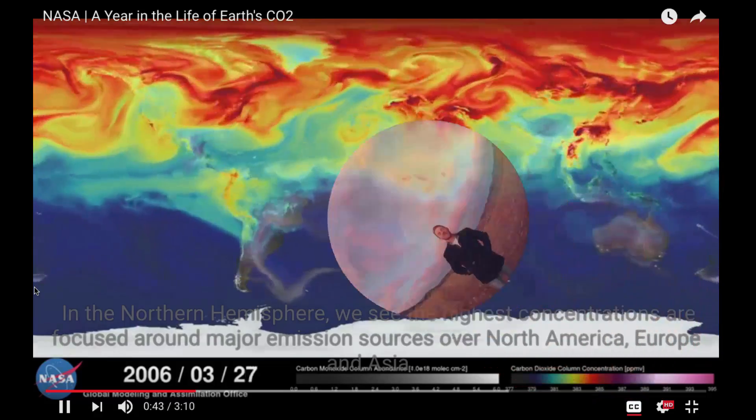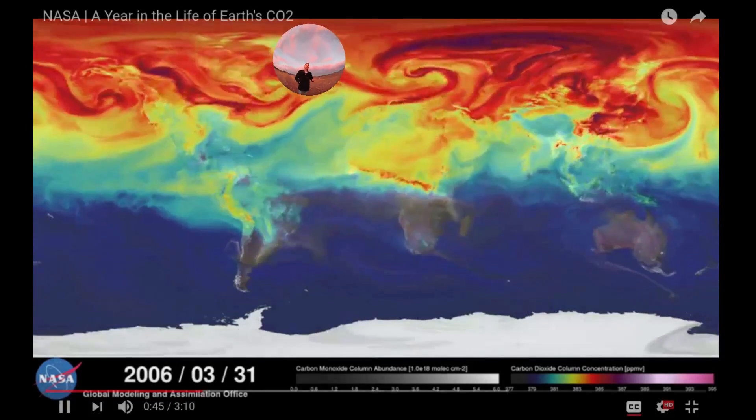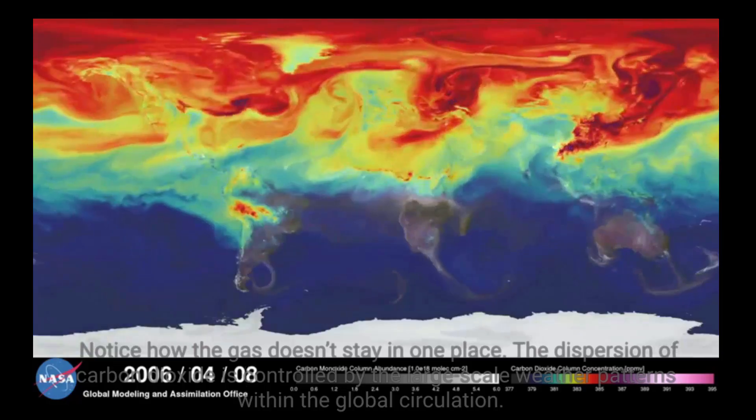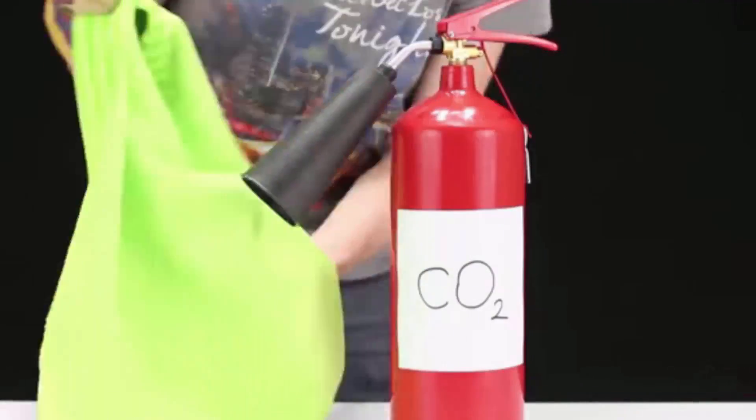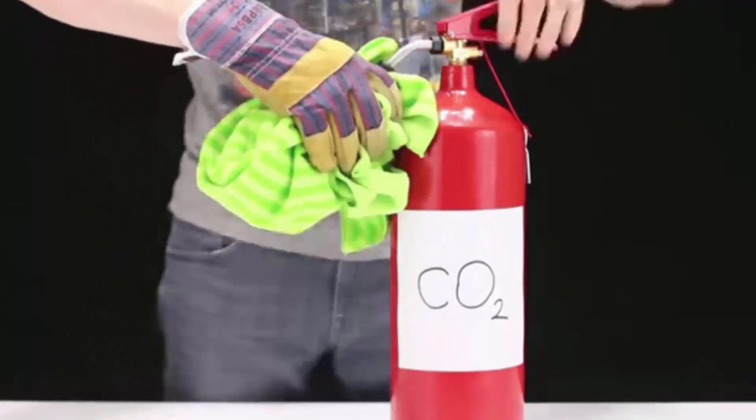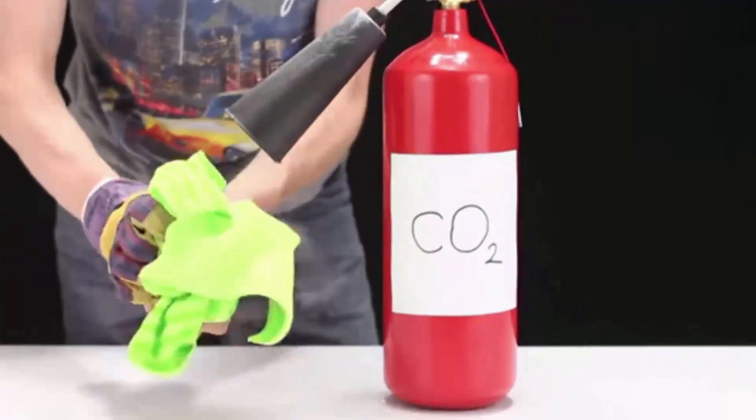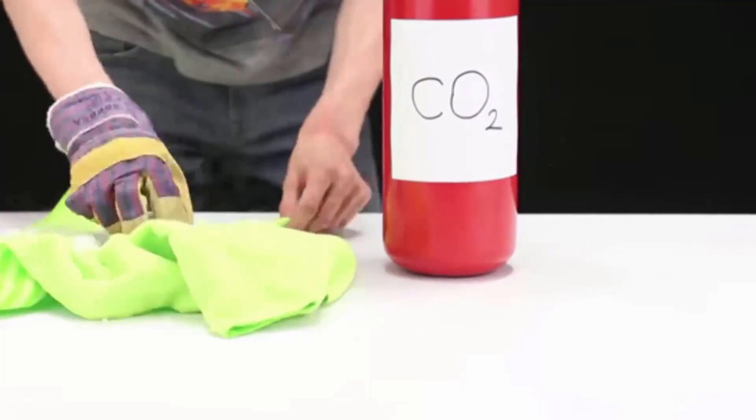For example, CO2 is a gas. We exhale it, it spews from our cars, our power plants, and it's causing global warming. Normally, if we want to turn CO2 into a solid, we either have to freeze it - dry ice is frozen CO2 - or we have to put it under very high pressure, both of which require a lot of energy to do so.